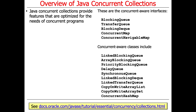Concurrent collections go further to optimize performance for concurrent programs, and there's a whole bunch of them. You can see interfaces like concurrent map, blocking deque, and blocking queue, and then there's a bunch of classes that implement these in clever ways. We're going to focus primarily on concurrent hash map with a little discussion about the blocking queues.